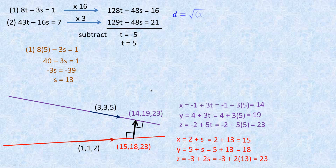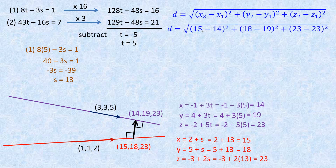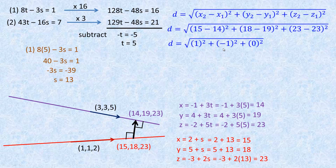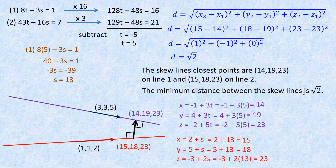To find the shortest distance, I'll use the distance formula in 3D space. So: square root of (15 minus 14) squared plus (18 minus 19) squared plus (23 minus 23) squared, which is square root of 1 squared plus negative 1 squared plus 0 squared, which equals the square root of 2. The skew lines' closest points are (14, 19, 23) on line 1 and (15, 18, 23) on line 2, with minimum distance equal to the square root of 2.